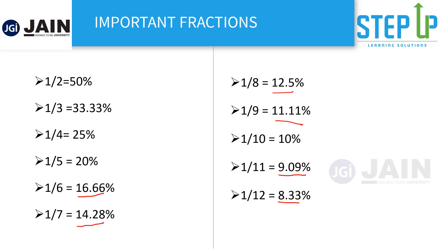I hope you know how we arrive at one by two being 50 percent. Percent means everything by 100, but when you say one by two, it is one per two, not per hundred. To convert it into a percentage, you multiply by 50 so the denominator becomes 100 — and whatever you do to the denominator, you do to the numerator. So it becomes 50 by 100, or 50 percent. I want you to pause this video and memorize all of these ratios and numbers.